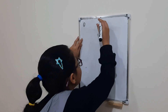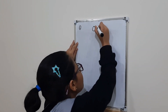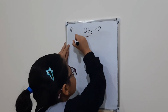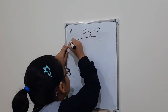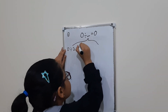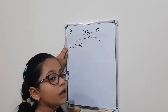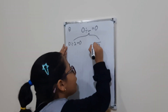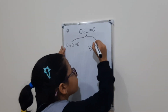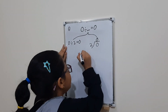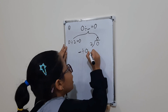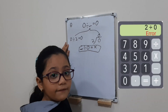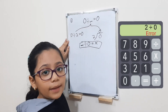The first step: zero divided by any number equals zero. Example: zero divided by two equals zero. We will make it in the vertical way, so it will be zero divided by two equals zero. But if any number is divided by zero in the divisor, it will be wrong — even if you do it on the calculator, it will give you an error.